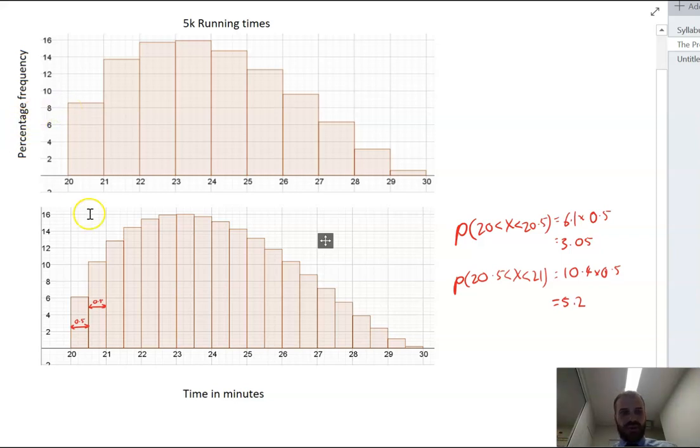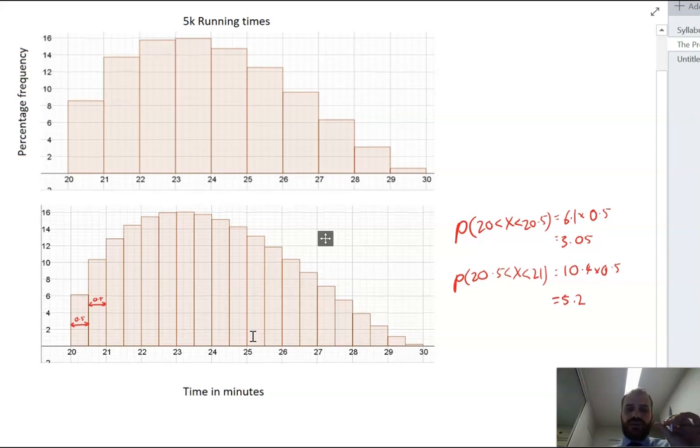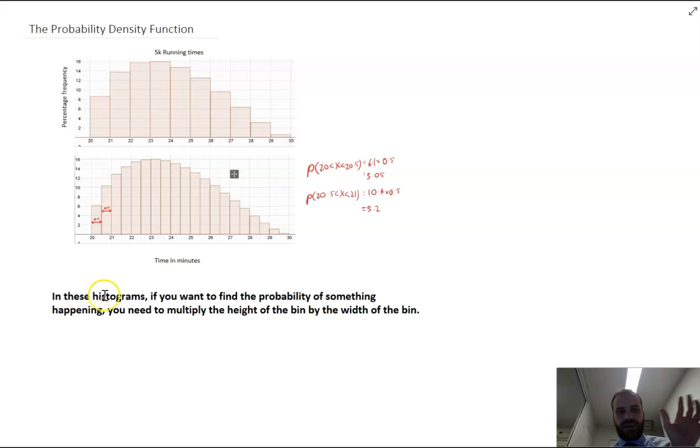So these are special histograms where if you want to find the probability, you need to consider the area of the column of the bin. Now, of course, that wasn't a problem here, because essentially what I was doing was taking the number 8 point something and multiplying it by the width of the bin, which is 1. So I could just read them off the side. But as I change the widths of my bins, I now need to multiply by the width of the bin to get the probability. This allows me to do something pretty neat with it.